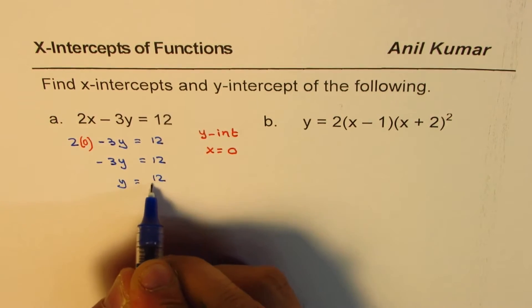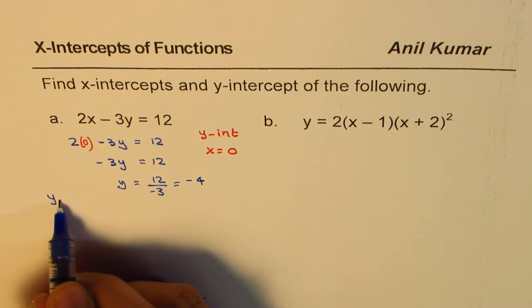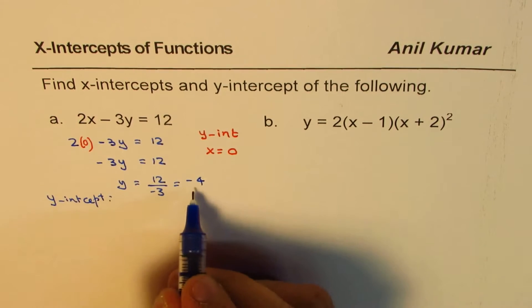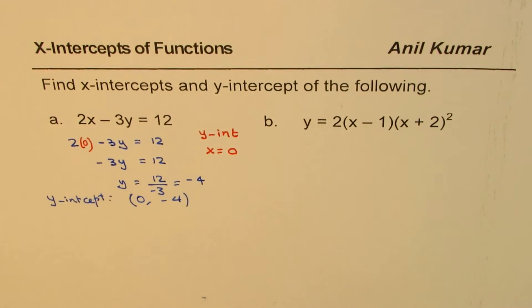Or y is equals to 12 divided by minus 3, that is minus 4. So y-intercept is minus 4. You could also write this as (0, -4) since x is 0.